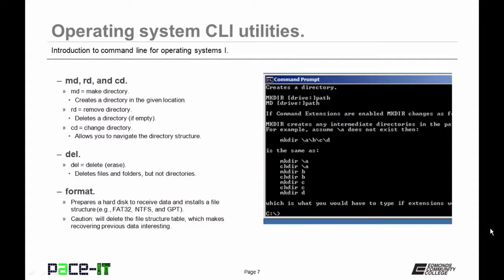Now let's talk about some operating system command line utilities, starting with directories. MD stands for make directory — it creates a directory in a given location. RD stands for remove directory — it deletes a directory if the directory is empty (no files or folders in it). CD is the change directory command — it's the navigational command. DEL stands for delete — it erases files and folders, but not directories.